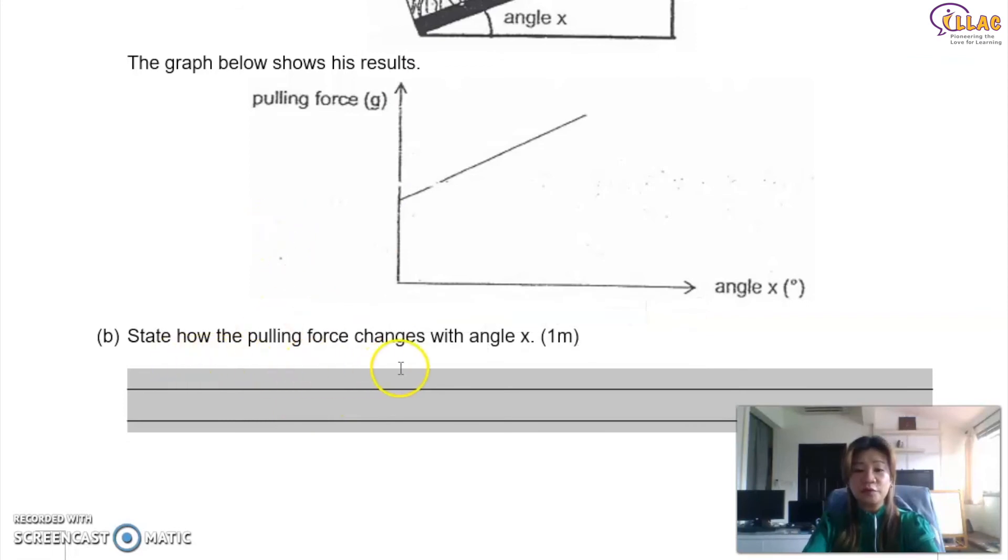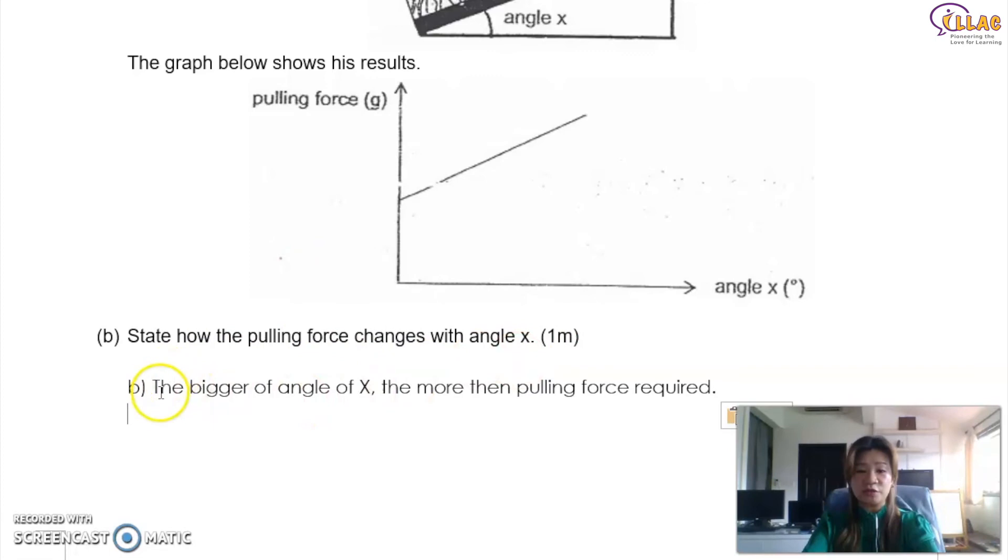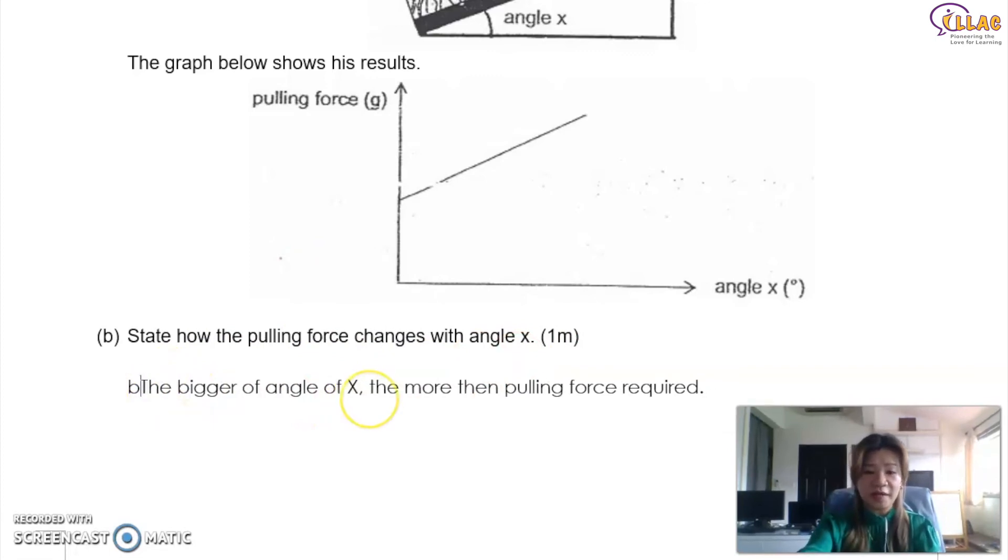Say, how the pulling force changes with angle x. So basically, this is a graph question, a relationship question. So this is how you answer it. The bigger the something, the more the something, or the lower the something, the higher the something, is always the same way of answering. So in this case, it is the bigger the angle x, the more the pulling force required. So that's the answer. The moment you get the bigger and the more respectively, you will get your correct full marks.